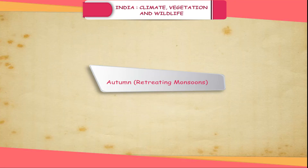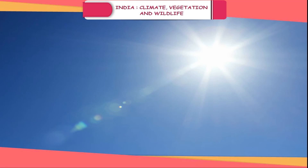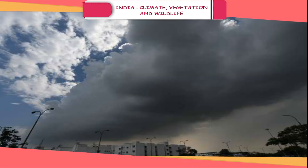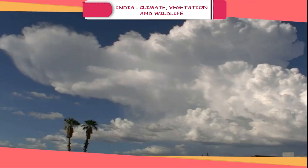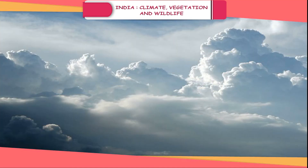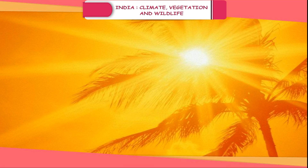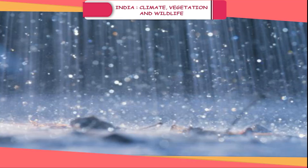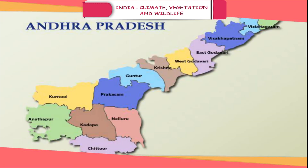Autumn — Retreating Monsoons: The monsoon starts retreating from India in the month of October. During this time, the sun's direct rays are back on the equator and the Indian Peninsula starts to cool down again as the sun starts to move away from the Tropic of Cancer. In the early parts of October, the heat remains oppressive as the ground is still moist and the sky remains clear, making the weather uncomfortable. It is known as October heat. The retreating monsoons bring rainfall to coastal Tamil Nadu and Andhra Pradesh. The rains are often accompanied by strong winds.